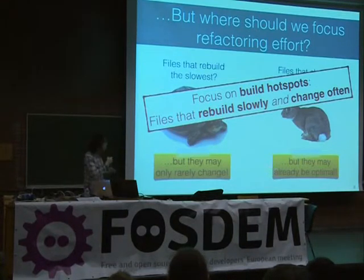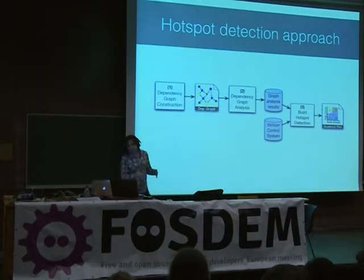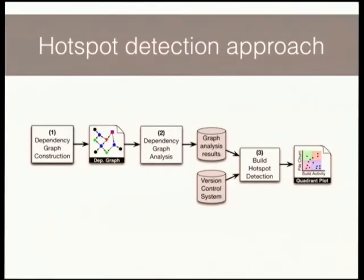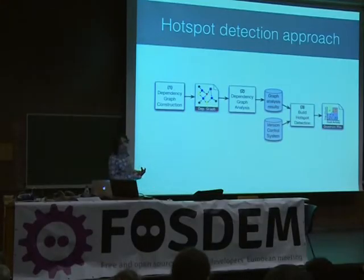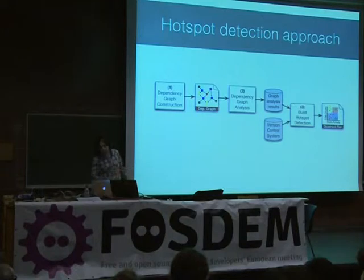We designed a three-step approach to find these hotspot files. We begin by extracting a dependency graph from your software system. Next, we take that dependency graph and analyze it to find the slowly rebuilding files, ending up with a database of results. Then we visit your version control system — your Git repository — and find the files that changed most frequently in the past, presuming they'll continue to change most frequently in the future. We combine that information into a visualization: a quadrant plot.